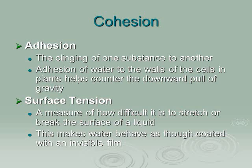The adhesion of water to the walls of the cells in plants helps counter the downward pull of gravity, and therefore a really tall tree can bring water from its roots all the way up to leaves that may be hundreds of feet in the air.